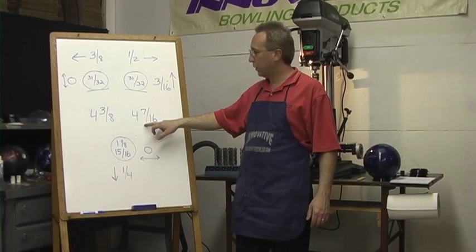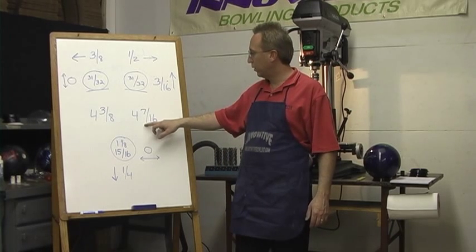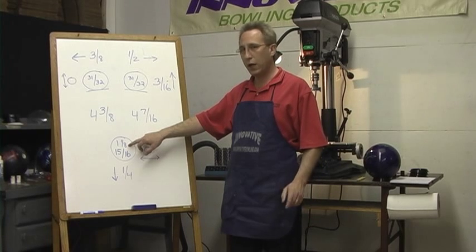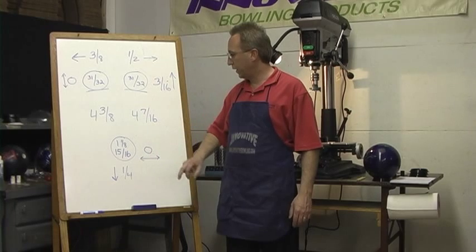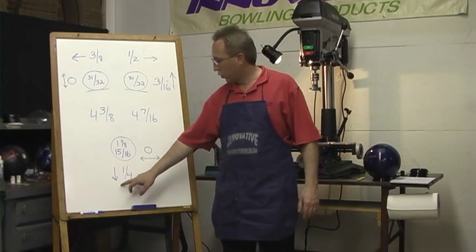And a cut span of 4 7/16" on the ring finger. We decided we're going to go with a 1 1/8" thumb slug, solid slug with the 15/16" hole, quarter reverse, zero left and right.